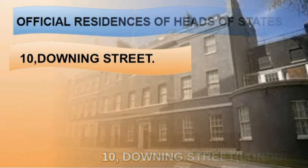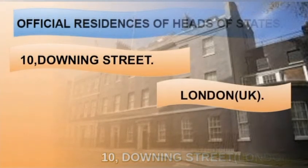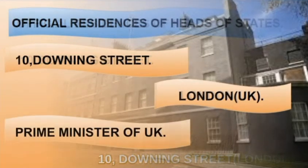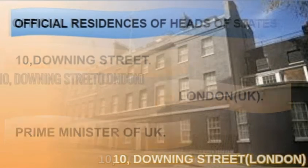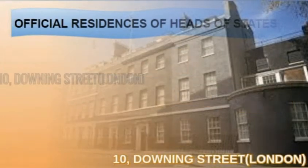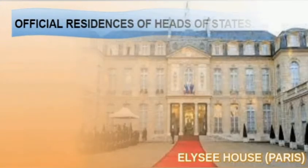Coming to the next one, 10 Downing Street, London. 10 Downing Street is situated in London, UK, and it is the official residence of the Prime Minister of UK.